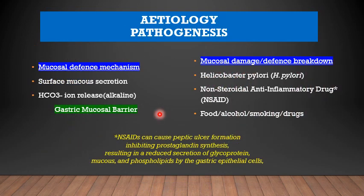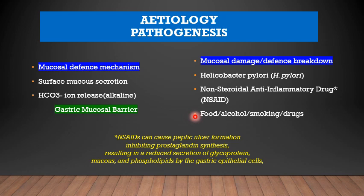Next we come to the etiology and pathogenesis of Peptic Ulcer. There are two mechanisms that act on the gastric mucosa. One is known as the gastric mucosal barrier which prevents breakdown and ulcer formation. The other is the mucosal damage or breakdown in the defence mechanism that promotes the development of Peptic Ulcer. The mucosal defence barrier consists of the surface mucus secretion and the bicarbonate ion release, which is alkaline and protective on the surface of the mucosa.